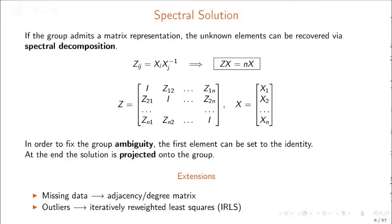This formulation assumes full measurements but can be extended to the case of missing data by using matrices associated with the graph, such as the adjacency matrix. It can also be made robust using iteratively reweighted least squares.